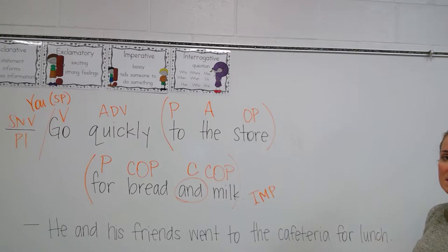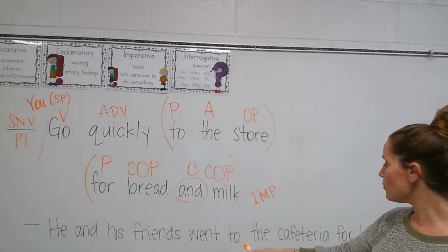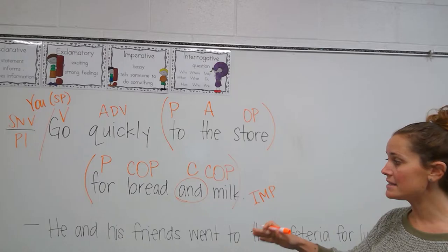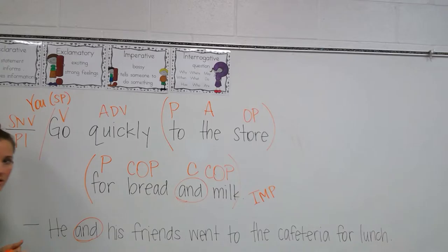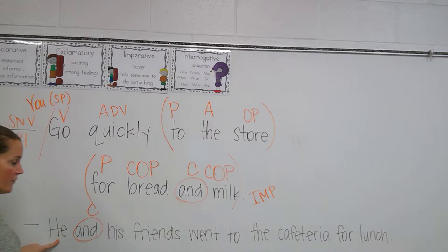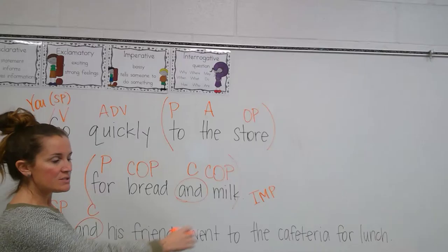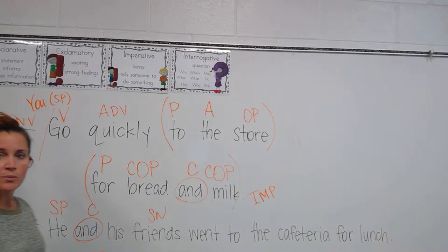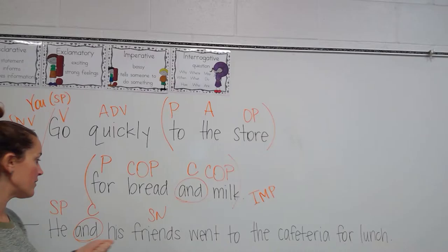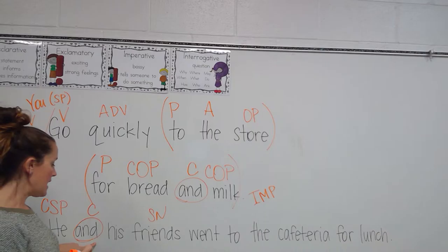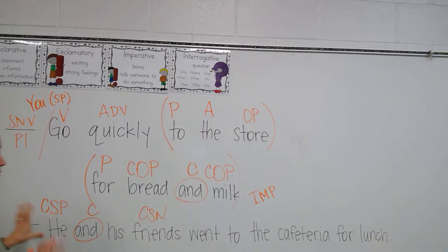The next sentence says: 'He and his friends went to the cafeteria for lunch.' The first question we ask is: who went to the cafeteria for lunch? He and his friends. We notice right away that 'and' is a conjunction, so we mark that. What is it combining? 'He' went to the cafeteria for lunch — that's a subject pronoun. 'Friends' went to the cafeteria for lunch — that's a subject noun. So we have a compound subject pronoun and a compound subject noun joined together with a conjunction.